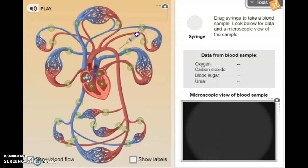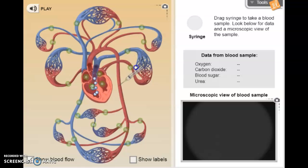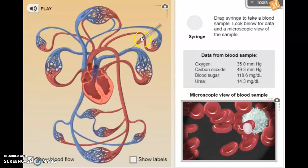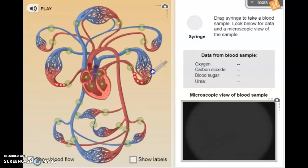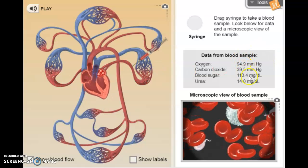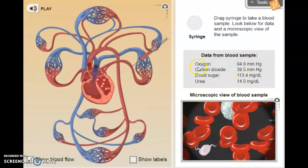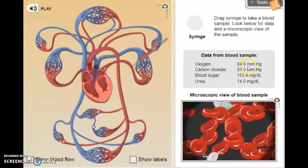When I move the syringe, sorry if that's gross for anybody, and I put it on one of the reds, anything that is red, we are gonna see that there is high oxygen levels, 94.9.